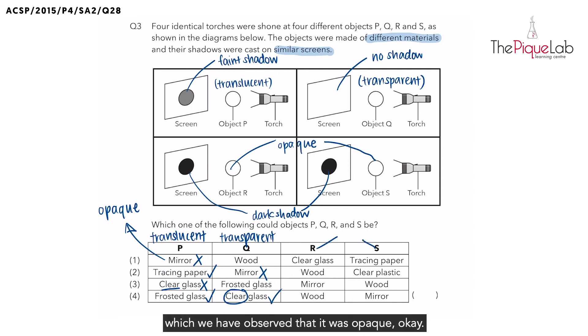Finally, we have object R and S, which we have observed that it was opaque. And option 4, wood is opaque and mirror is opaque. So in that case, number 4 is the correct answer.